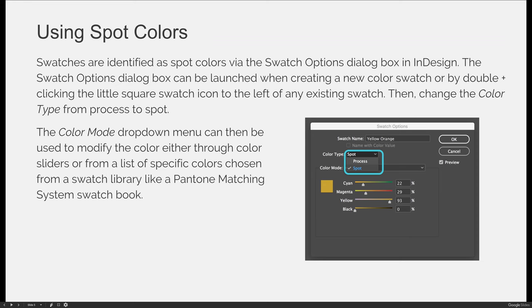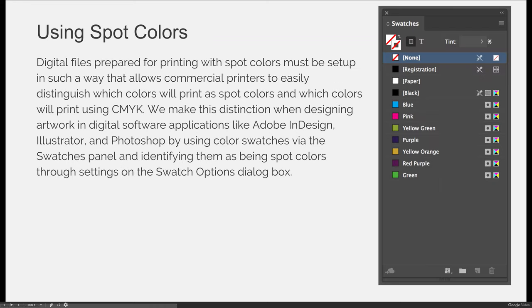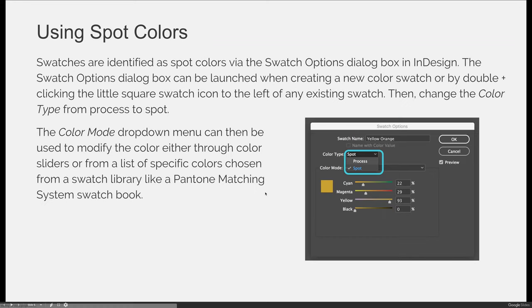The swatch icons you'll need to double-click are the little colorful icons to the left of the label of your swatch. Simply double-click it and it will launch the Swatch Options dialog box. The Color Mode drop-down can then be used to modify the color either through color sliders or from a list of specific colors chosen from a swatch library like the Pantone Matching System Swatch Book or Swatch Library.